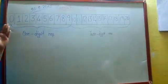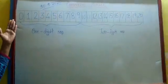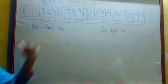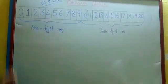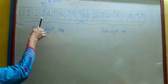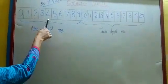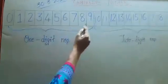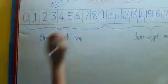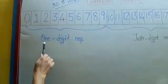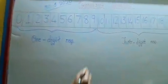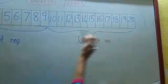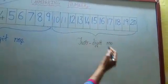See on the number line. Numbers from 0 to 20 are written on this number line: 0, 1, 2, 3, 4, 5, 6, 7, 8, 9. These numbers are called one-digit numbers. Numbers from 10 to 20 are called two-digit numbers.